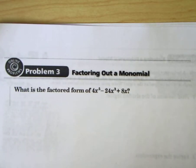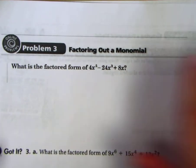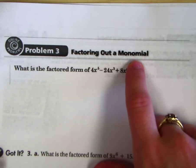Now that you have a handle on finding the greatest common factor, we're going to move to factoring out a monomial.